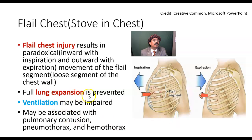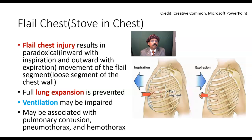Full lung expansion is jeopardized because lung expansion depends on movement of the ribs. With three or more ribs having two or more fracture points, lung expansion is disturbed and ventilation may be impaired. Ventilation depends on movement of the chest wall and expansion and contraction of the lung. It may also be associated with pulmonary contusion, because the sharp ends of the ribs may puncture or damage the lung tissue and pulmonary pleura.